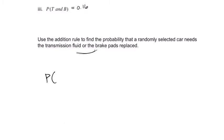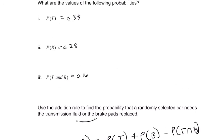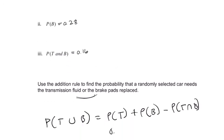So probability of T or B, and that's going to be the probability of T plus the probability of B minus their intersection T and B. So we're just going to use the numbers they gave us. 0.38 plus 0.28, minus 0.16.